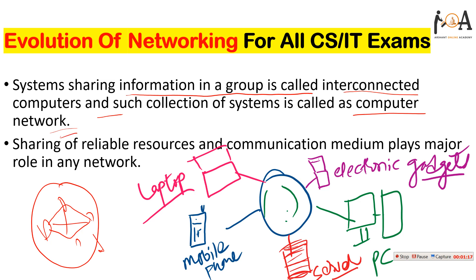So that is the basic terminology for computer network. Sharing of reliable resources and communication medium plays a major role in any network. You can see in the diagram that some laptops, electronic gadgets, smartphones, mobile phones, servers, and PCs are there. Whenever you want to communicate with one another or exchange information from one location to another, from one system to another globally, networking is required. The communication medium — whether it is ad hoc, wi-fi, or internet — plays a major role.